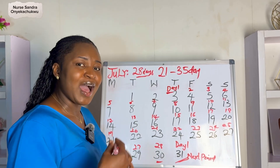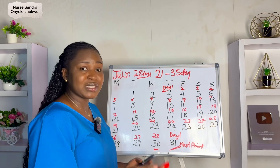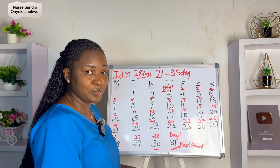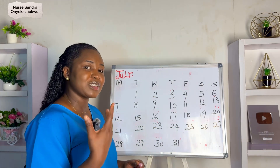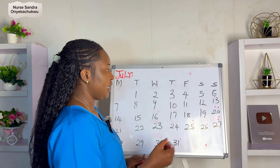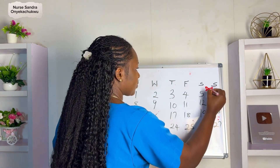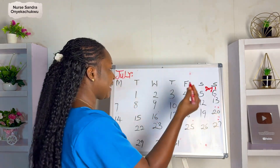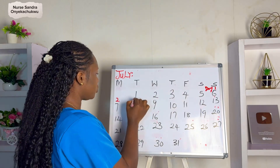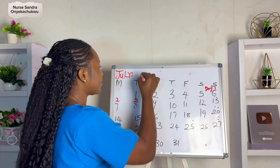Now that you know how to calculate your menstrual cycle length, how do you predict your next period? It's basically the same thing. For example, if the 6th of July is day one of your cycle and it lasted for three days — day one, day two, day three — and you have a 22-day cycle length.